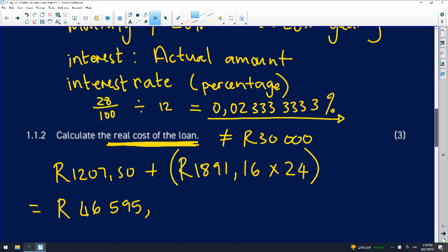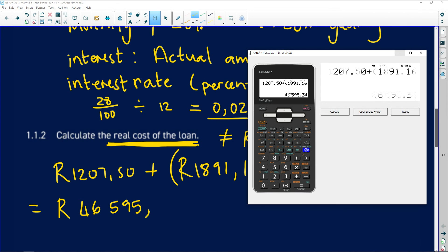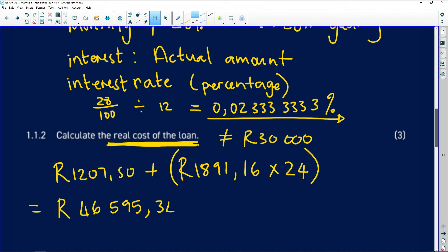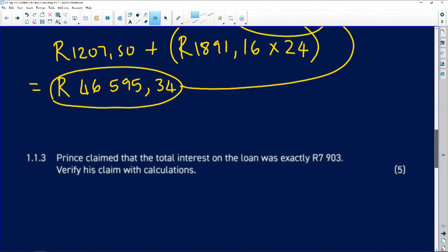So look at that. You made a loan of 30,000 Rand and you are paying back 46,595.34. So do you see the difference between the real cost and the difference between the money that you loaned? So be careful when it comes to that in particular.